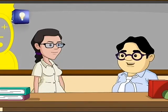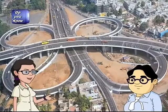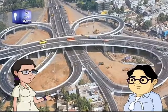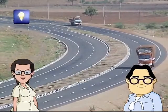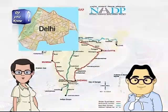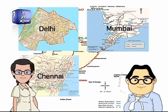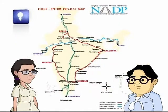Well Snail, the Golden Quadrilateral is the largest express highway project in India. It connects the four major metros of India: Delhi, Mumbai, Chennai, and Kolkata. Take a look at this map connecting the four major metro cities of India.